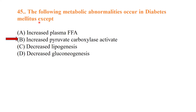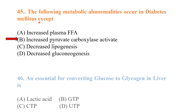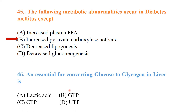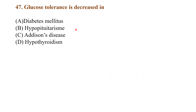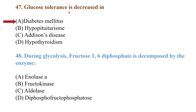An essential factor for converting glucose to glycogen in the liver is UTP. Glucose tolerance is decreased in diabetes mellitus. During glycolysis, fructose-1,6-diphosphate is decomposed by the enzyme aldolase.